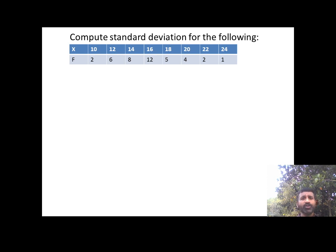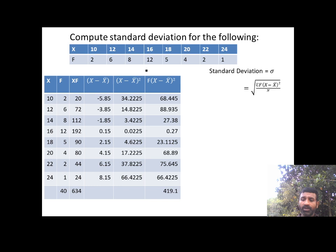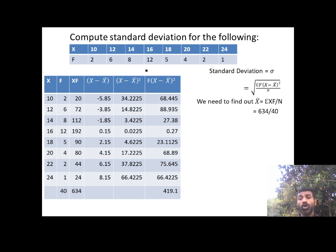This is grouped data with frequencies, so I will apply the frequency formula. Let me first write the formula on a new screen. The standard deviation sigma equals the square root of the sum of f(x minus x-bar)² divided by capital N. For grouped data we need the arithmetic mean first. The sum of fx is 634, and N is 40, so the mean is 634 divided by 40.